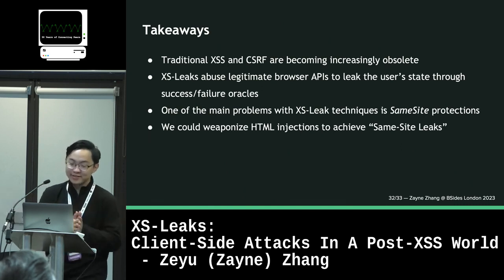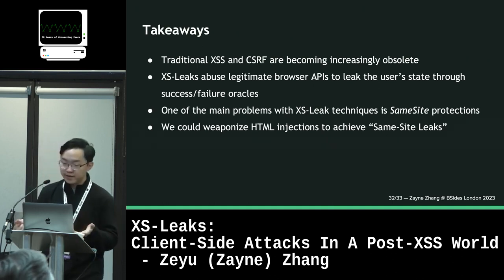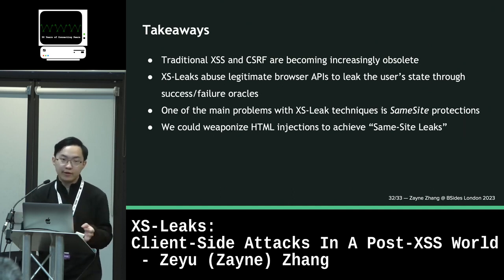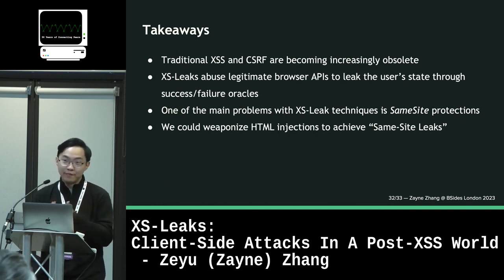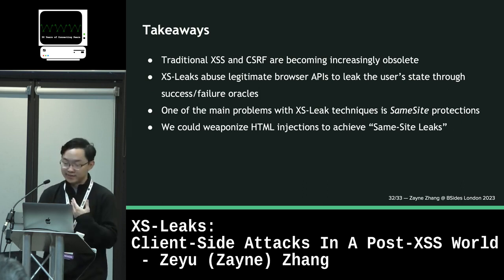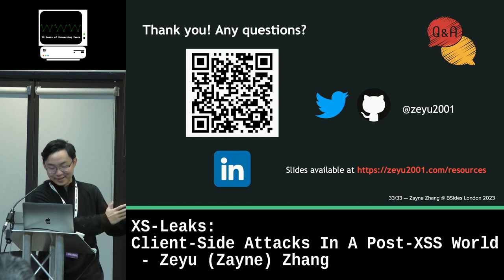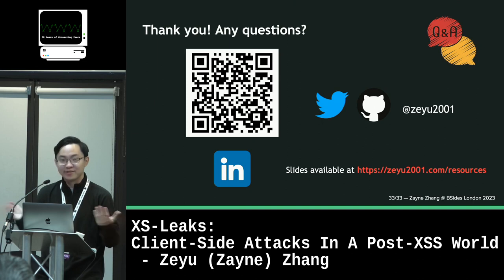Takeaways: traditional XSS and CSRF are becoming increasingly obsolete. XS leaks abuse legitimate browser APIs to leak user state through success and failure oracles. One of the main problems with XS leak techniques is same-site protections, but we could get around that by weaponizing HTML injections to achieve same-site leaks if the target site already has an HTML injection vulnerability. That brings me to the end of the presentation — slides for this talk are available at the link shown, and I'll be happy to take any questions. Thank you.